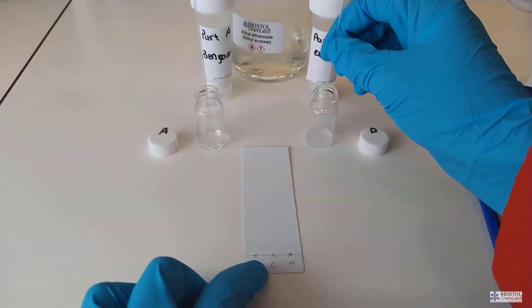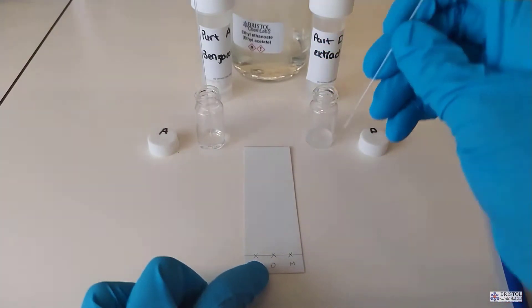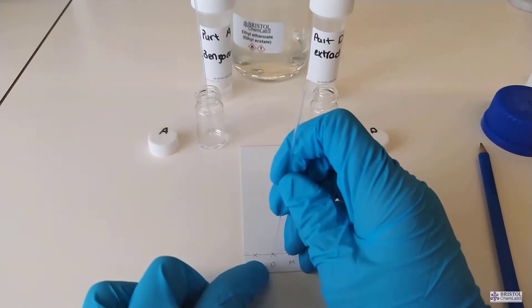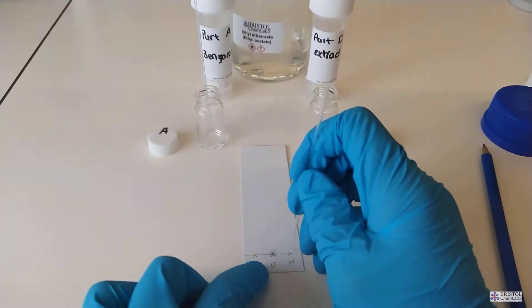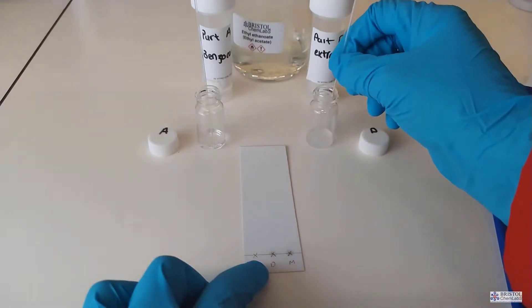Before we run the TLC we put the plate under an ultraviolet light. Because the sample applied has covered over the fluoresce it appears as a dark spot against a green fluorescing background. You can also check there are no impurities elsewhere on the plate at this point.